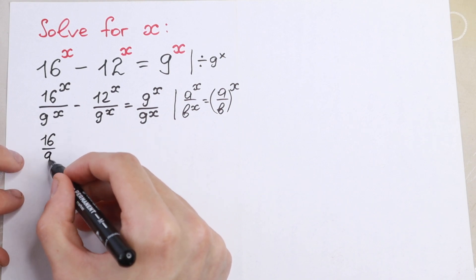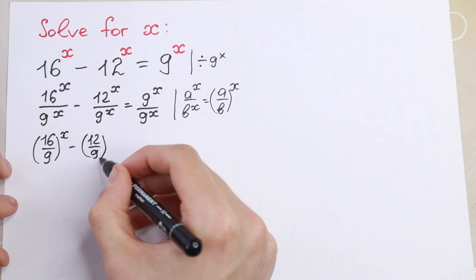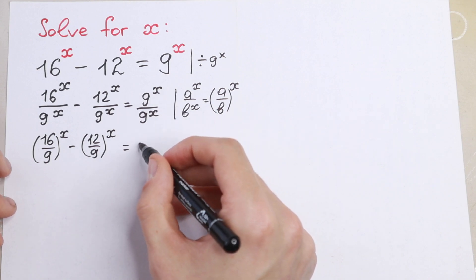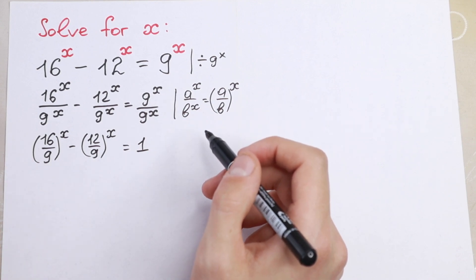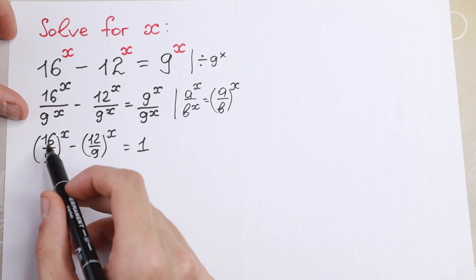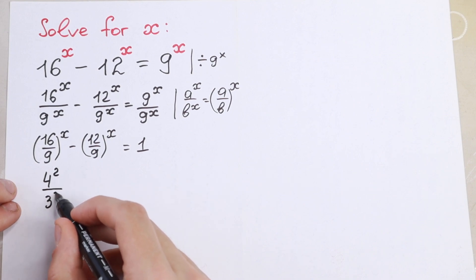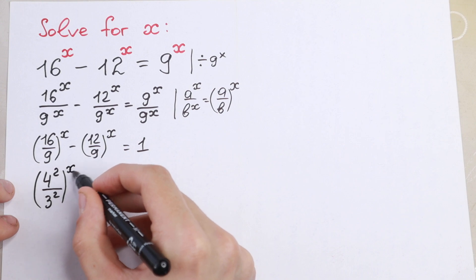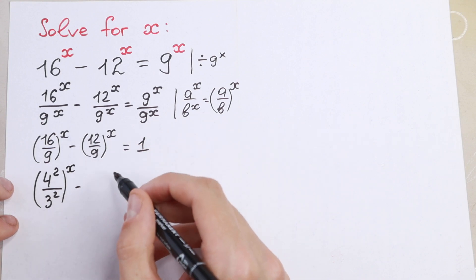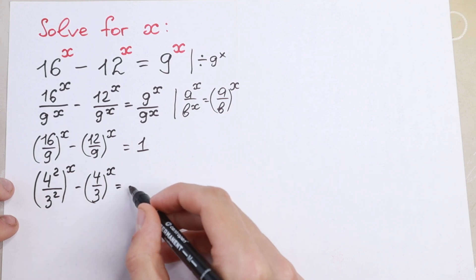So we will have 16 over 9 to the power x, minus 12 over 9 to the power x, equal to 1 — since numerator and denominator are the same, they cancel. Now, 16 and 9 are really good numbers: 16 is 4 squared and 9 is 3 squared, raised to the power x. And minus — we will have 4 over 3 to the power x, canceling numerator and denominator by 3. So we have 4 over 3 to the power x, equal to 1.